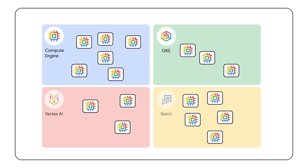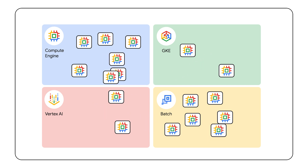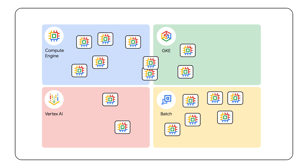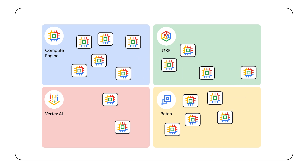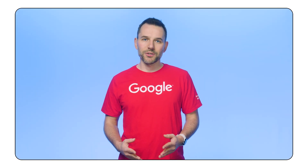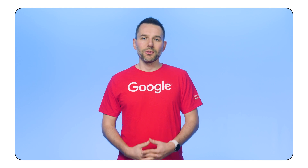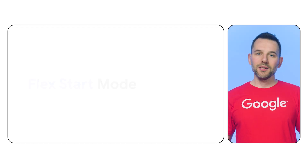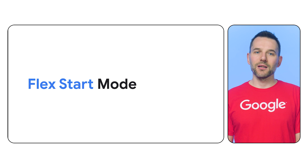Compute Engine, Google Batch, GKE, and Vertex AI can all consume reserved resources. You can switch between the products or split resources between them — you are in control for the duration of the reservation. Just remember, you pay for those resources for the full time of the reservation, whether you use them or not.